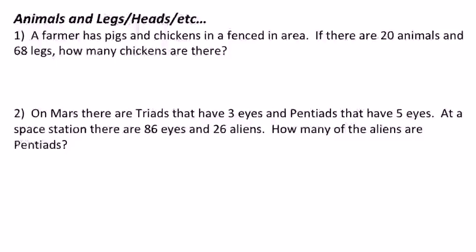In this first problem, a farmer has pigs and chickens in a fenced-in area. If there are 20 animals and 68 legs, how many chickens are there? We first have to realize that pigs have four legs and chickens have two legs — that's the key difference. The way I like to approach these problems is to first do one of the extremes. So what if we had all chickens? That would mean we'd have 40 legs — 20 chickens times two legs. But we need 68 legs, so that's not enough, so we replace one of the chickens with a pig.